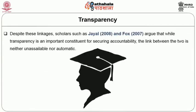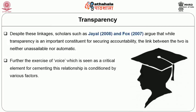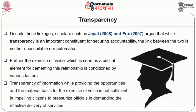Despite these linkages, scholars such as Jial and Fox argue that while transparency is an important constituent for securing accountability, the link between the two is neither unassailable nor automatic. The exercise of voice, which is seen as a critical element for cementing this relationship, is conditioned by various factors. Transparency of information, while providing the opportunities and material basis for the exercise of voice, is not sufficient in impelling citizens to pressurize officials in demanding effective delivery of services.